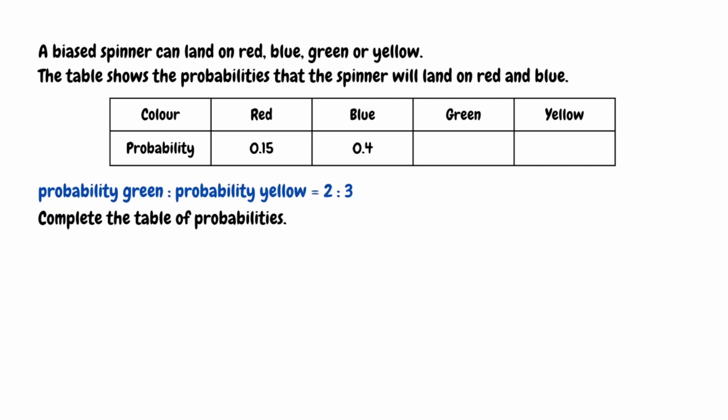For our final question, we have that a biased spinner can land on red, blue, green or yellow. The table shows the probabilities that the spinner will land on red and blue. The probability of green to the probability of yellow is in the ratio of 2 to 3. We need to complete the table of probabilities. We can rewrite the probability of green to yellow as the ratio 2 to 3. Adding the individual parts: 2 add 3 gives us 5 total parts.